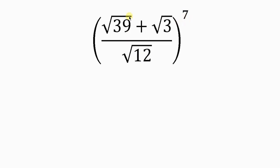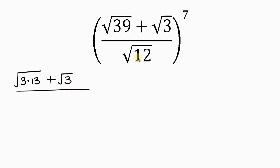Our first step will be to simplify what we have inside the parentheses. So we have the square root of 39, which is the same as 3 times 13, plus the square root of 3, all over the denominator — the square root of 12, which is the same as 3 times 4 — and this is raised to the 7.